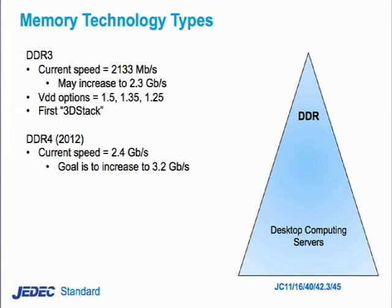DDR4 is the next generation that's currently in definition. It's defined right now to go up to 2.4 gigabits per second, with a goal to reach 3.2 gigabits. Whether it will actually get to that speed because of physics limitations is undecided. To reach these higher speeds, there's a set of protocols that allow the controller and the DRAM to train each other and figure out optimal parametric settings such as drive strength and timing.